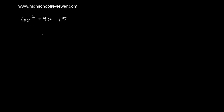To factor this trinomial, first we need to multiply our first term and our third term. Multiplying, we will have 6x squared multiplied by negative 15. This will give us negative 90x squared. We will then factor this out and find the factors that will give us the sum equal to our second term.